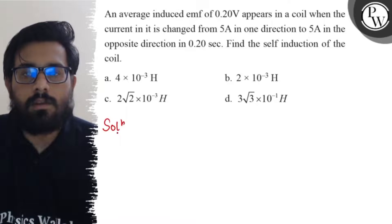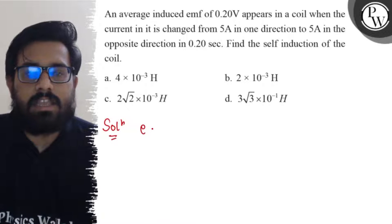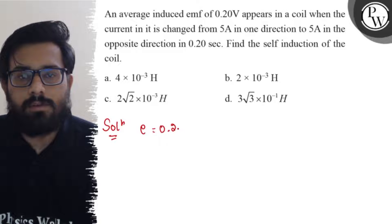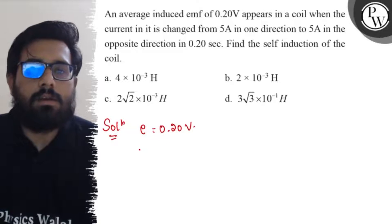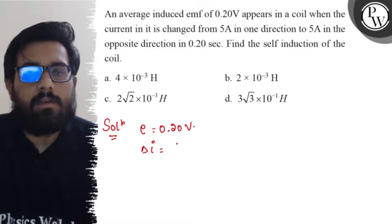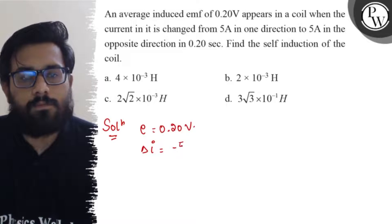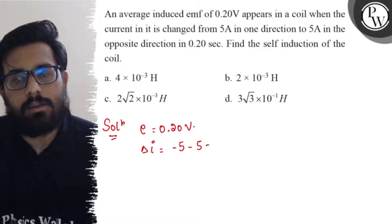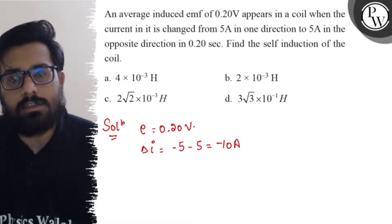So in this question we have induced EMF as 0.20 volt. We have a change in current. Delta I can be written as final current minus 5 minus initial current 5. So this comes down to minus 10 ampere as the change in current.